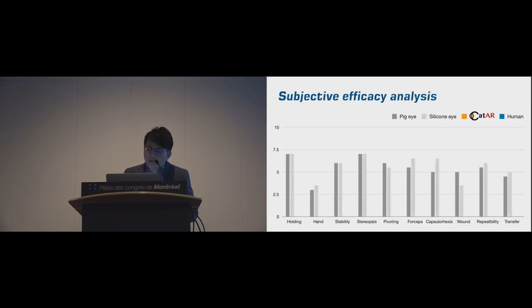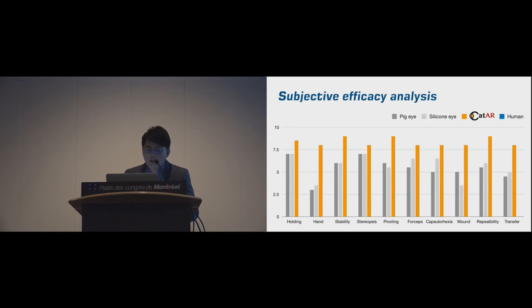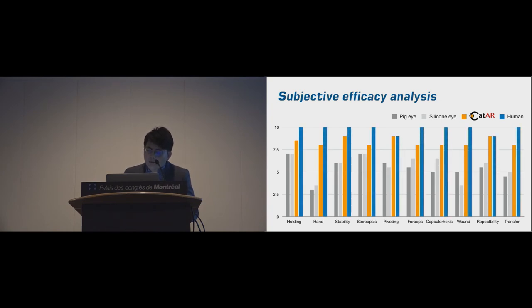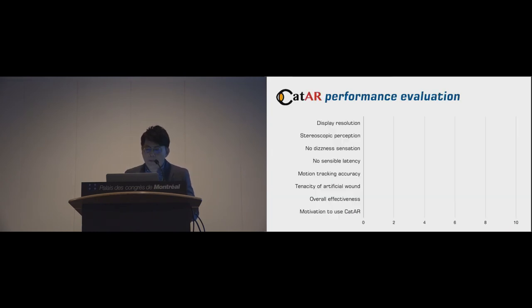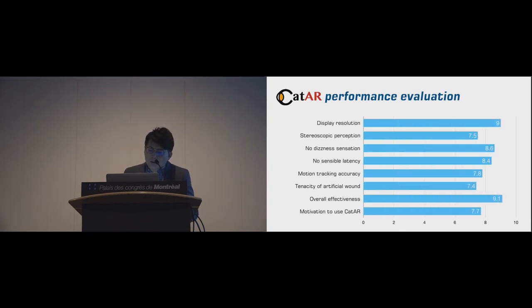In comparison with traditional training methods, the CATAR system was evaluated to have better efficiency in all training goals than the pig eye and synthetic eye. Practice on the real human eye almost achieved full scores in every question. However, the CATAR system could provide similar training effect to human eyes in practicing the pivoting technique and its repeatability. The overall efficacy was excellent and they would like to use CATAR as a standard training method.